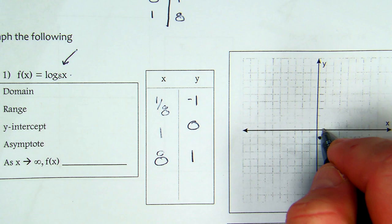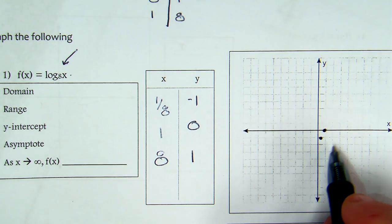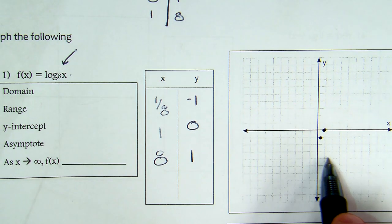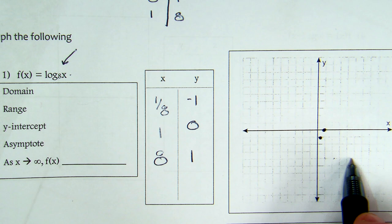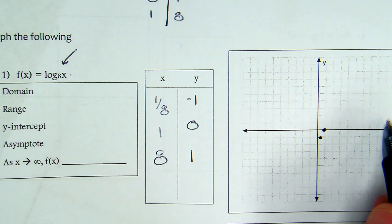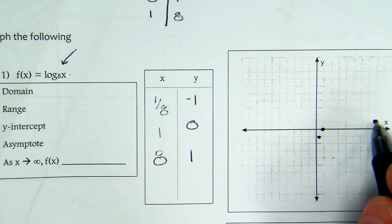So 1 over 8, negative 1 would be about there. 1, 0 about there. And 8, 1 - 2, 1, 2, 3, 4, 5, 6, 7, 8 - up to here, approximately the 8, 1.